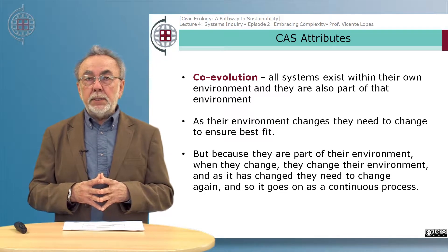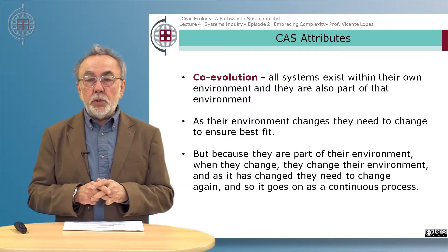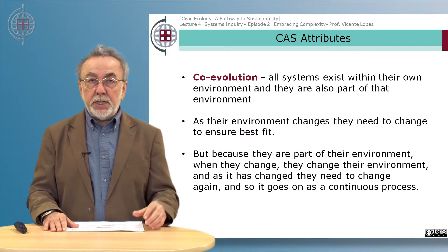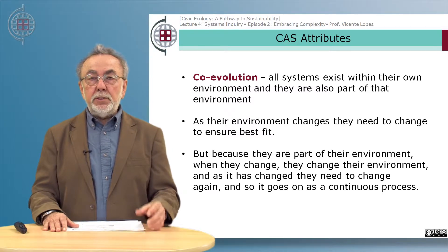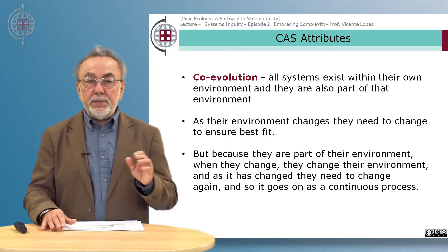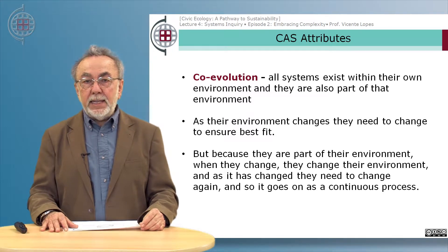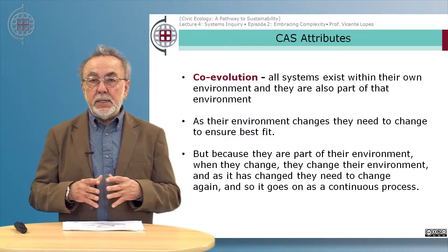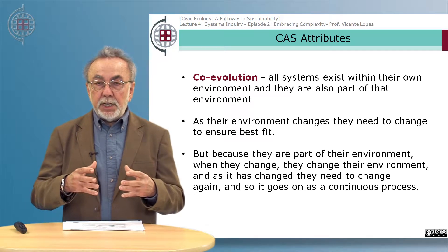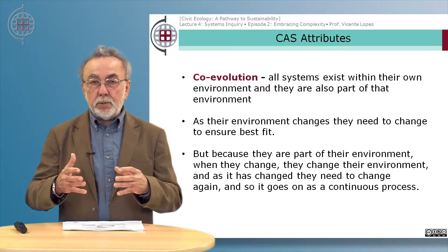Another important attribute of complex adaptive systems is co-evolution. All systems exist within their own environment and continuously interact with it. As the environment changes due to external conditions, organisms and systems within the system need to change in order to ensure best fit. But because they are part of the environment, when they change they change the environment again, and as it has changed they need to change again — a continuous process. I think of it as a cosmic dance in which the pairs try to adapt to the movements of the other.